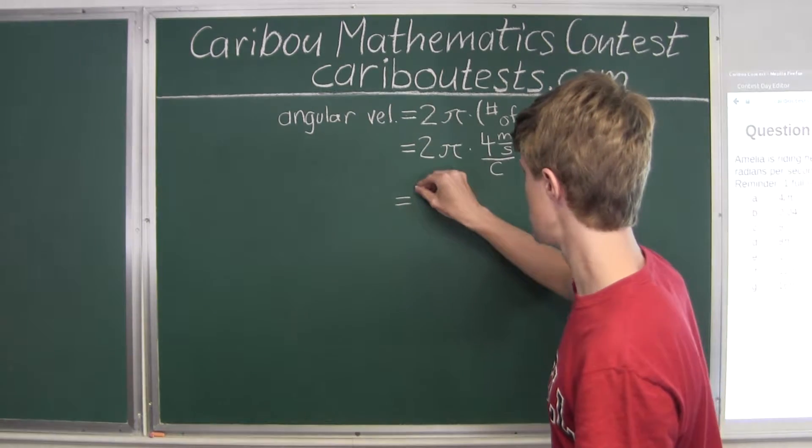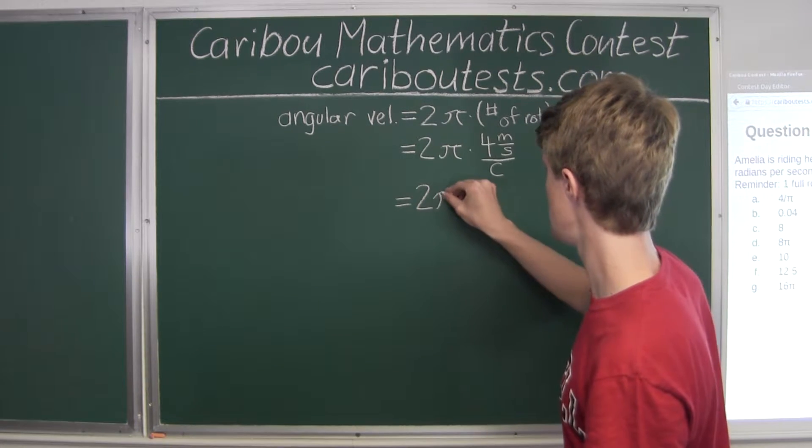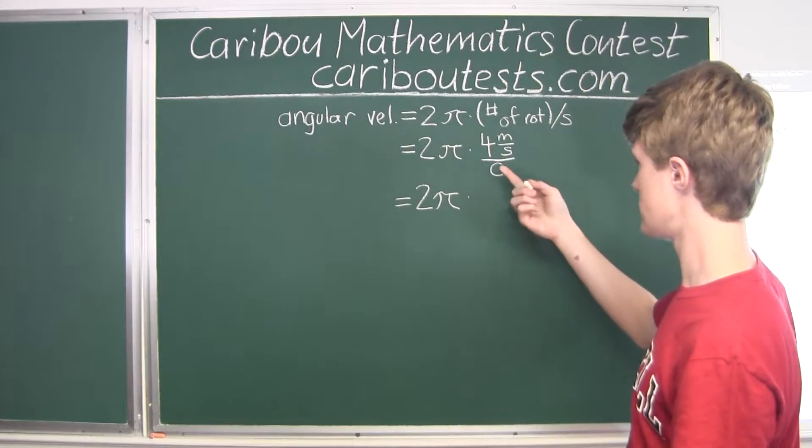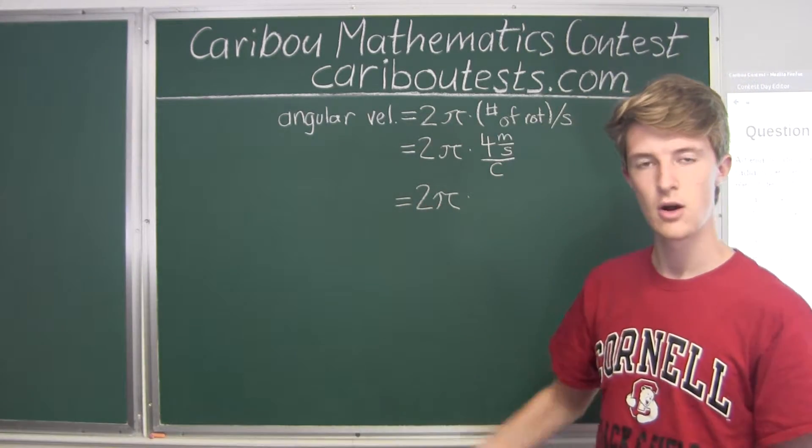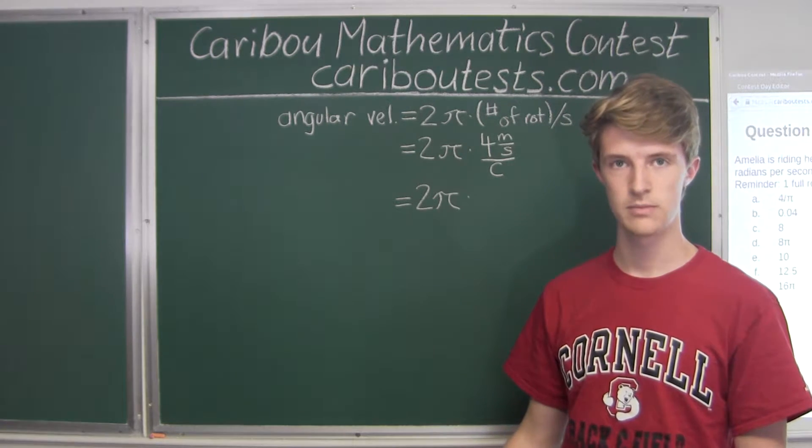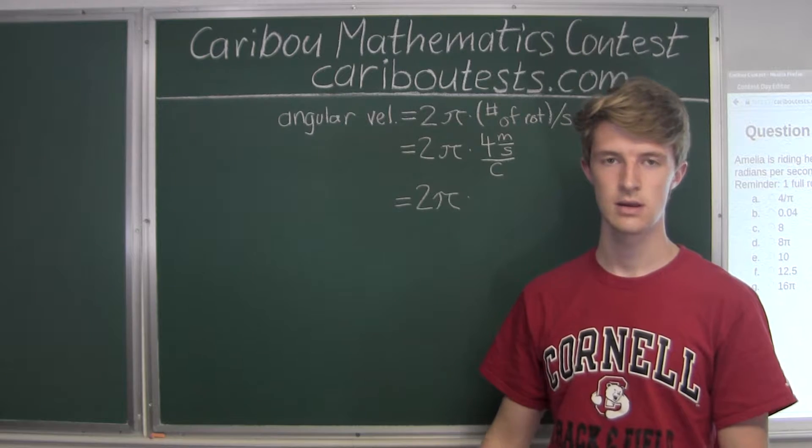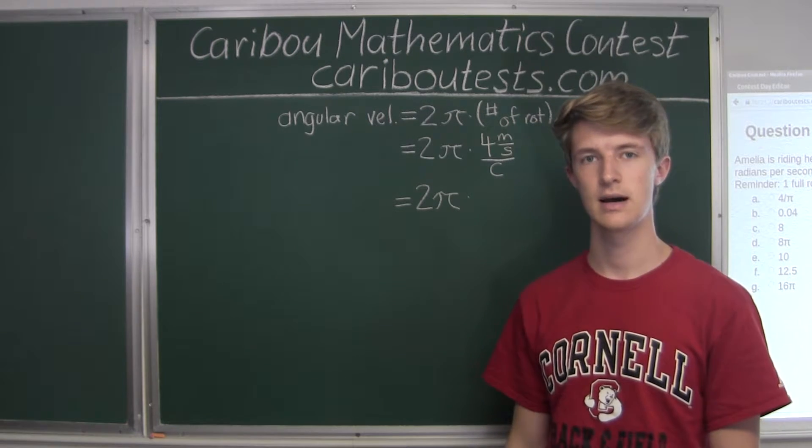Well, now let's just again rewrite the 2π, since that doesn't change. And now, let's find out what the circumference of the wheel is. Well, the bicycle wheel is a circle. So, the circumference of a circle is 2 times π times the radius.